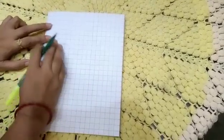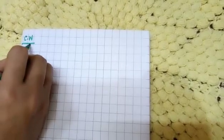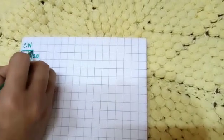Okay, in the left side of your copy you will write CW date. So here I am writing C dot W, give sleeping line and write today's date. Today is 26, 6, 20. Okay children.